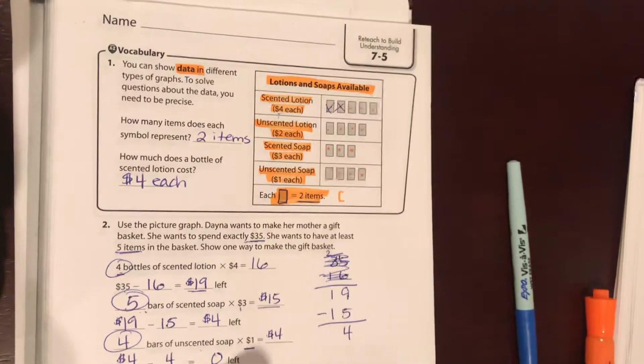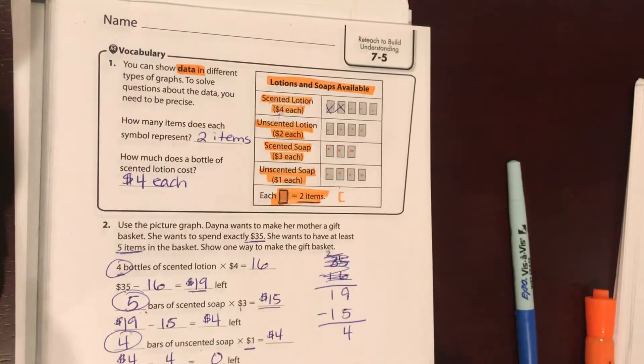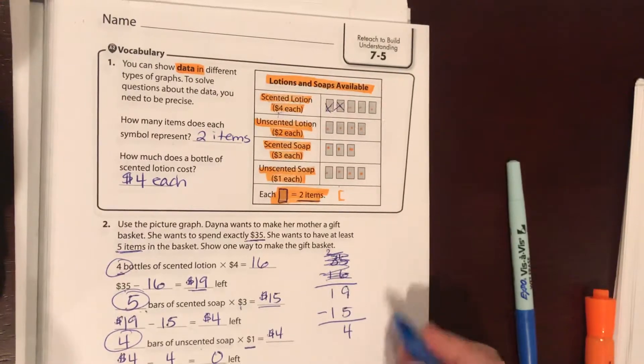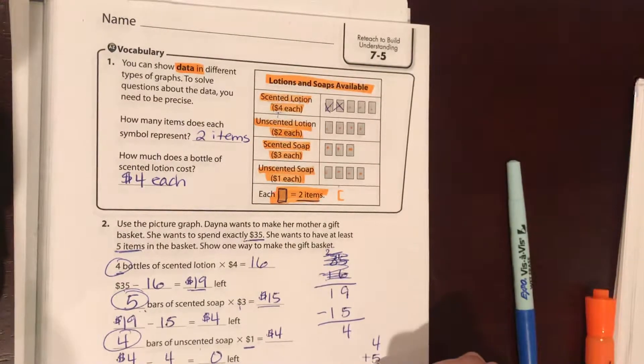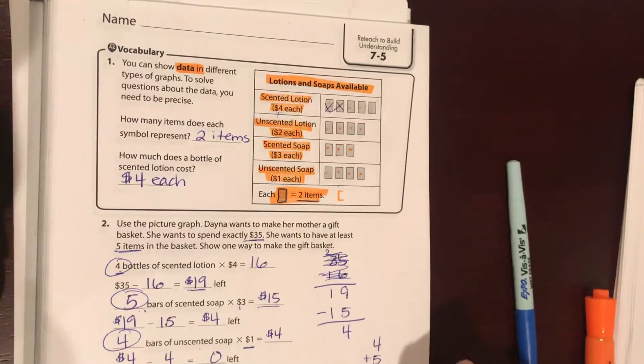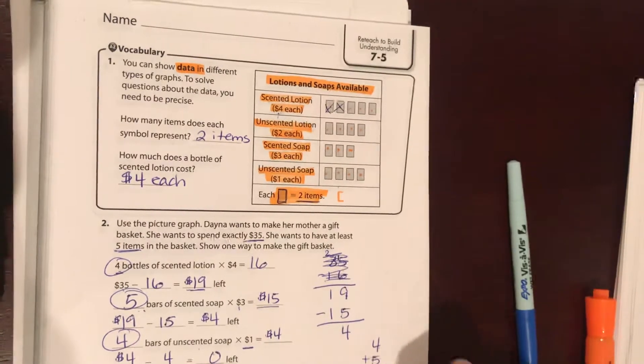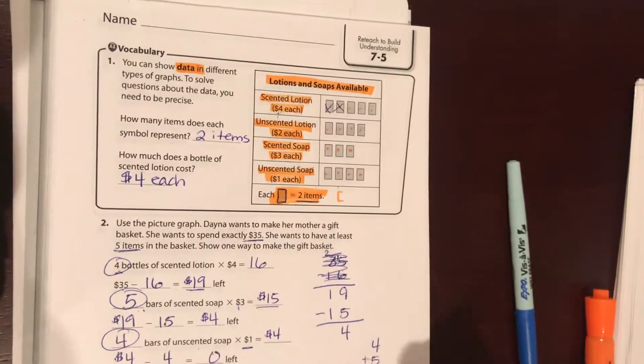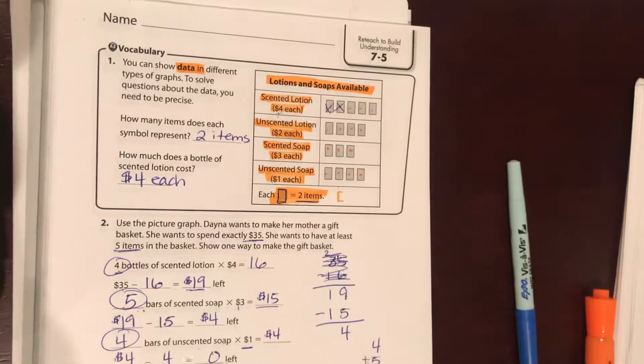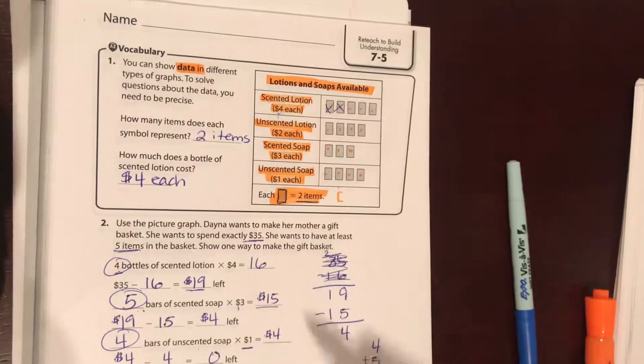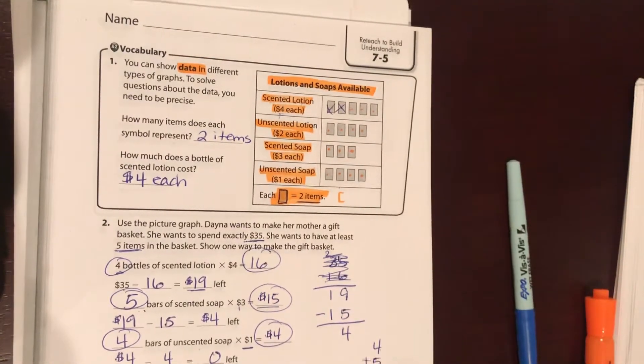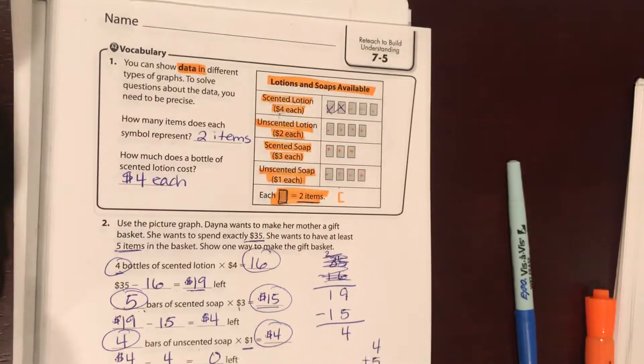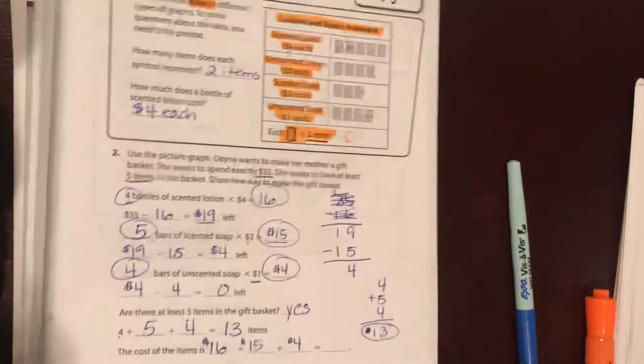Are there at least five items? We bought four of these, five of those, and four of those. So we have four plus five plus four. Four plus five is nine, ten, eleven, twelve, thirteen. So there's thirteen items. Do we have at least five? Yes. And the total cost of the items should be sixteen, fifteen, and four.